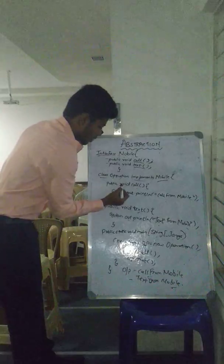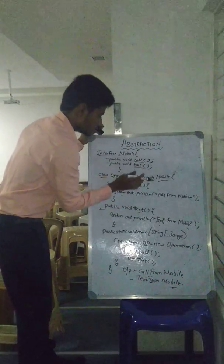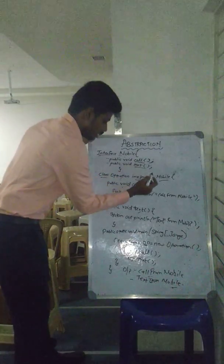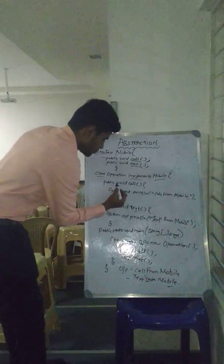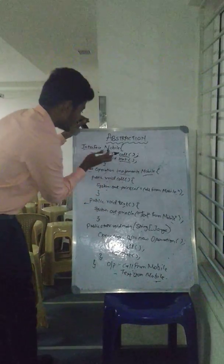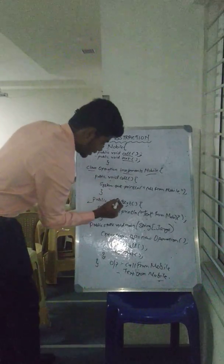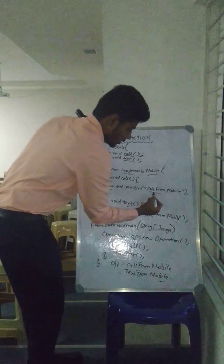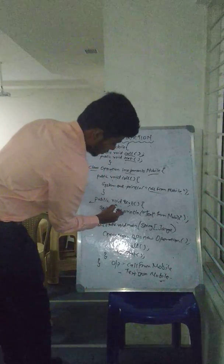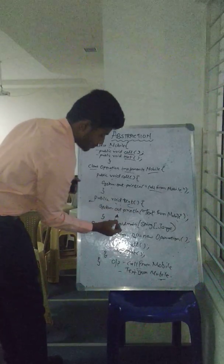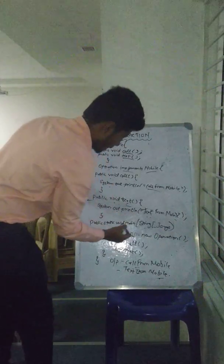We require to override that method and write body for abstract method. Here, public void call method we are present in interface, we have override here. We write what you want: call from mobile. Another method is text method. We write text from mobile.